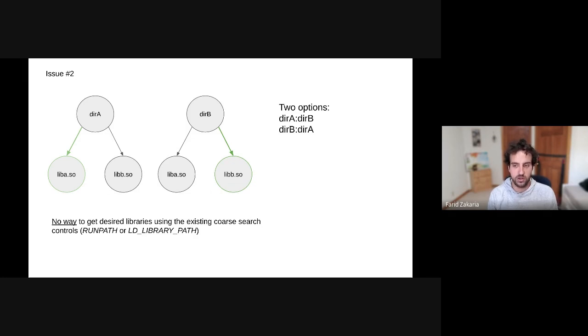Unfortunately, given the coarse nature of runPath, and this is a problem that applies to LD_LIBRARY_PATH as well, there's no way to do this in the current model. The only two ordering options that exist for these directories I've put on the slide: either directory A colon directory B, or directory B colon directory A. And neither of these orderings will result in the desired outcome. If directory A is in the front, then library A and library B will both be loaded from directory A, and vice versa if directory B is at the front.